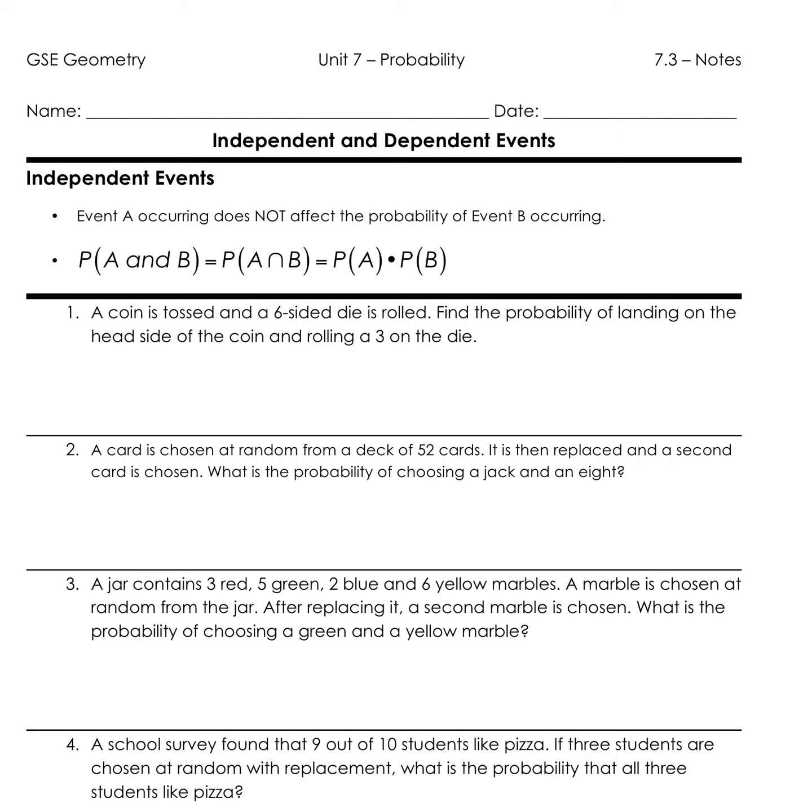Today we're going to continue our discussion on independent and dependent events. Remember, the difference between independent and dependent was in an independent event, event A does not affect the probability of event B. So we just take our probability of A and multiply it by the probability of B.